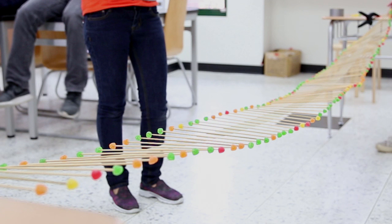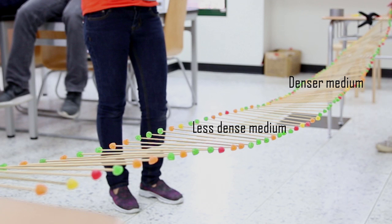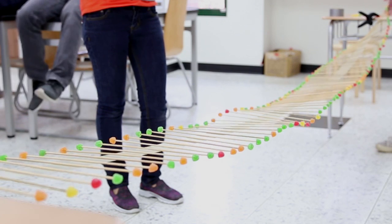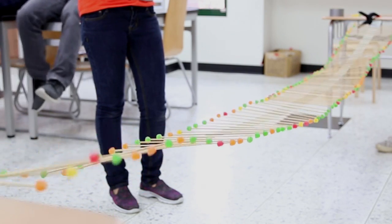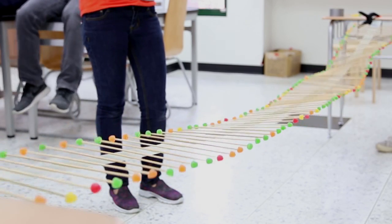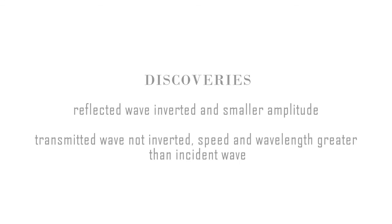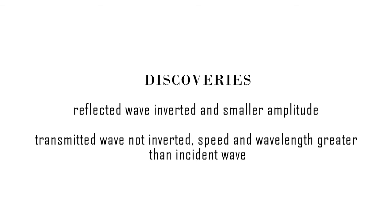For an extension, we decided to double the number of sticks on half of the wave machine. Similar to the third experiment with doubling the candies on one half, we are creating a denser medium and a less dense medium. We hypothesize that the same result will happen: the incident wave will be divided into reflected and transmitted waves. The reflected pulse will be inverted and have smaller amplitude, with the same speed and wavelength. The transmitted wave is not inverted and has speed and wavelength greater than the incident wave, and the frequency will stay the same.